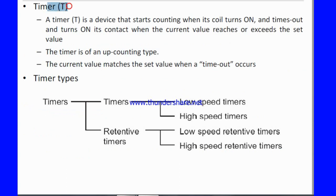Another one is timer. We use the T symbol for the timer. A timer T is a device that starts counting when its coil turns on, and times out and turns on its contact when the current value reaches or exceeds the set value. Whenever the input comes, the timer starts and runs until the target value is achieved.